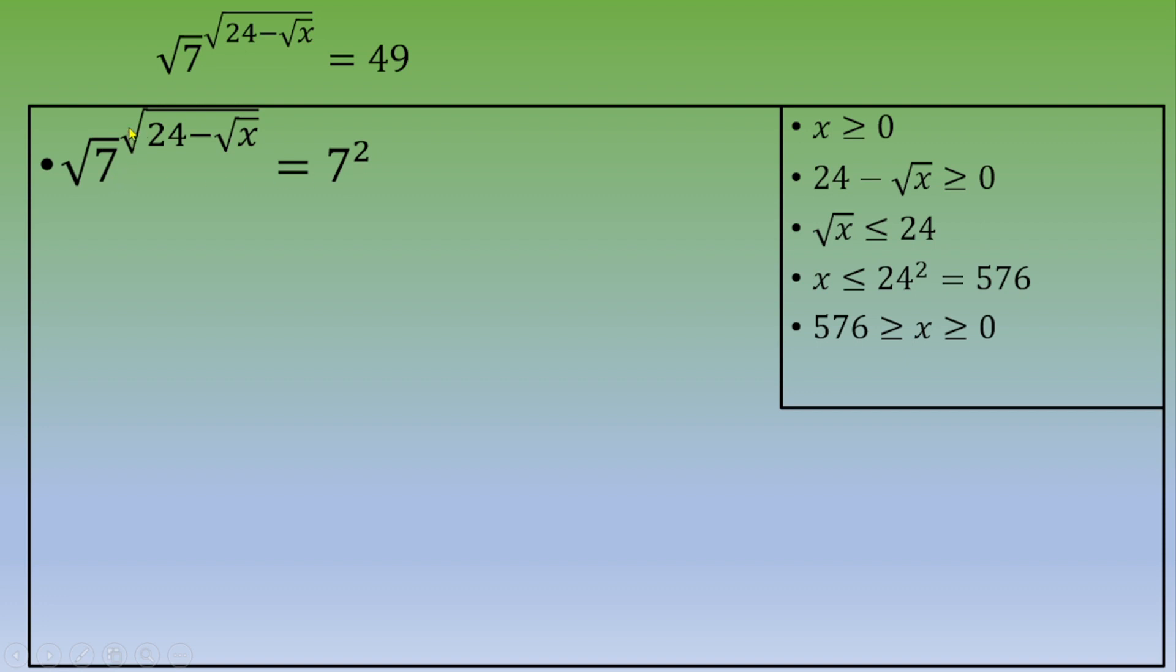On the left side, we can write 7 as (√7)² since 7 equals √7 squared. Let's do that.